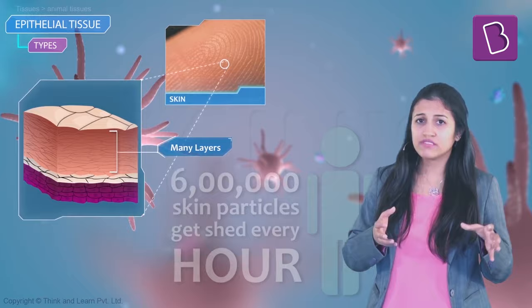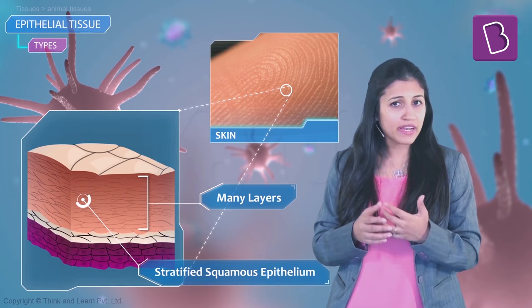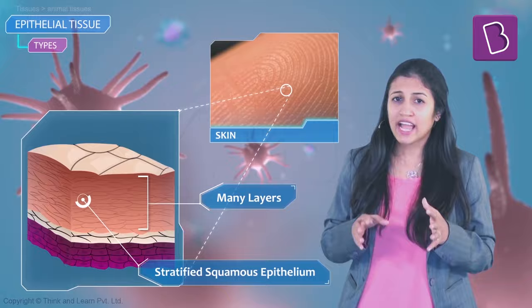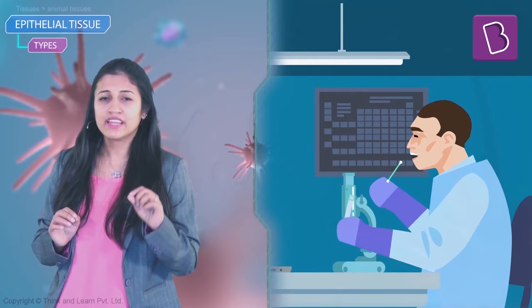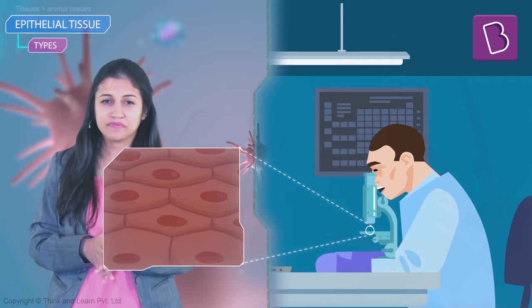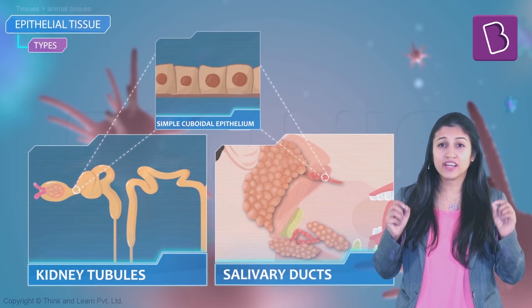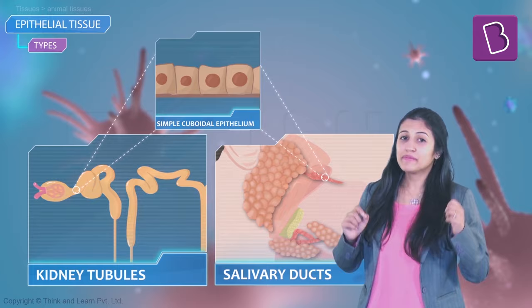You logically cannot keep regenerating a single layer, so the skin has stratified squamous epithelial cells. These multiple layers ensure the skin can withstand normal wear and tear. You can gently scrape the inner side of a cheek, stain it, and observe it under the microscope to find stratified squamous epithelial cells. Cuboidal cells are found in kidney tubules and ducts of salivary glands, where mechanical support is important.